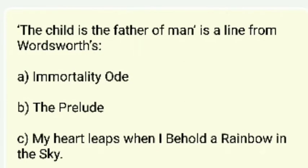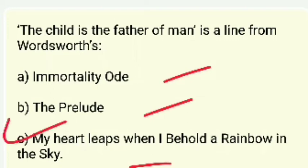'The child is father of the man' — in which poem by Wordsworth do we find this line? Options include Immortality Ode, The Prelude, or 'My Heart Leaps Up When I Behold a Rainbow in the Sky.' The right answer is 'My Heart Leaps Up When I Behold a Rainbow in the Sky.'